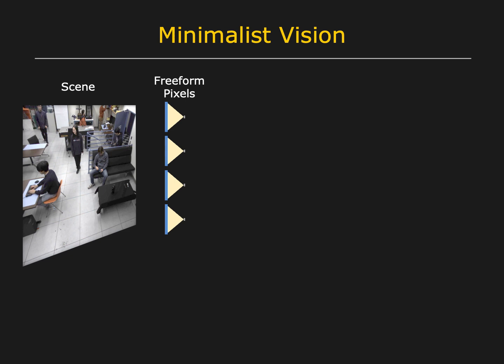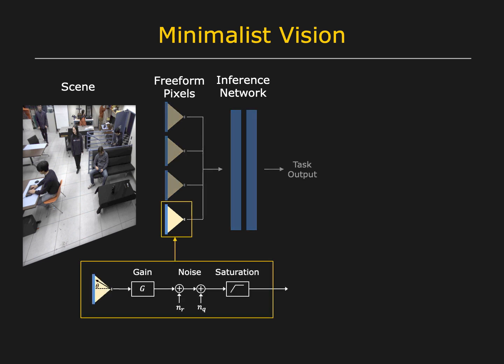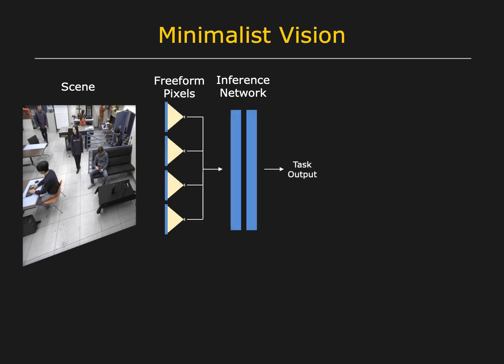Here you see a set of freeform pixels observing a scene. The outputs of the pixels are fed into a neural network, which we refer to as the inference network. Since freeform pixels perform a linear projection of the scene, they can be modeled as the first layer of a network. This model incorporates the optical and noise characteristics of each freeform pixel, and the transmittance values of each mask are trainable parameters. The first layer of freeform pixels and the inference network together comprise a minimalist vision system. For a given task, training data is captured with a traditional camera and is used to train all the parameters of the system.